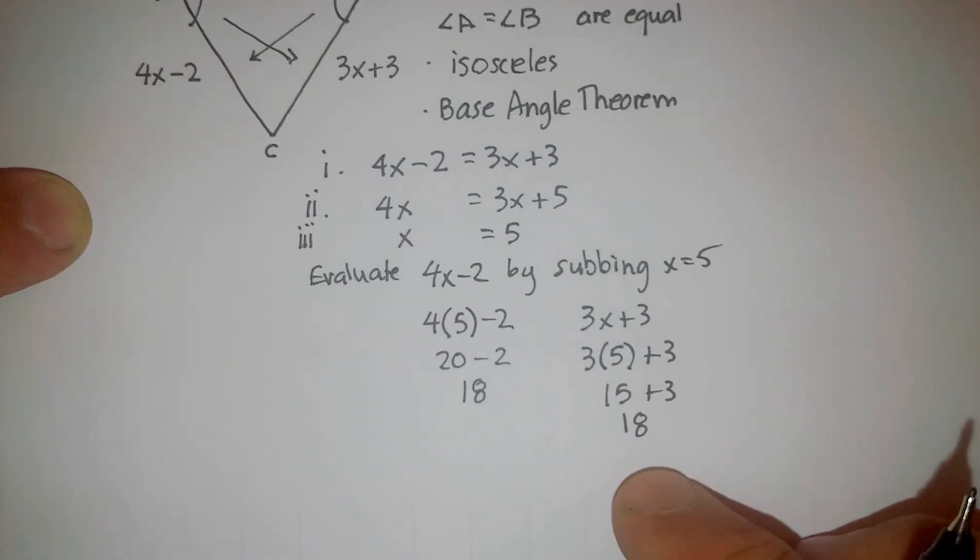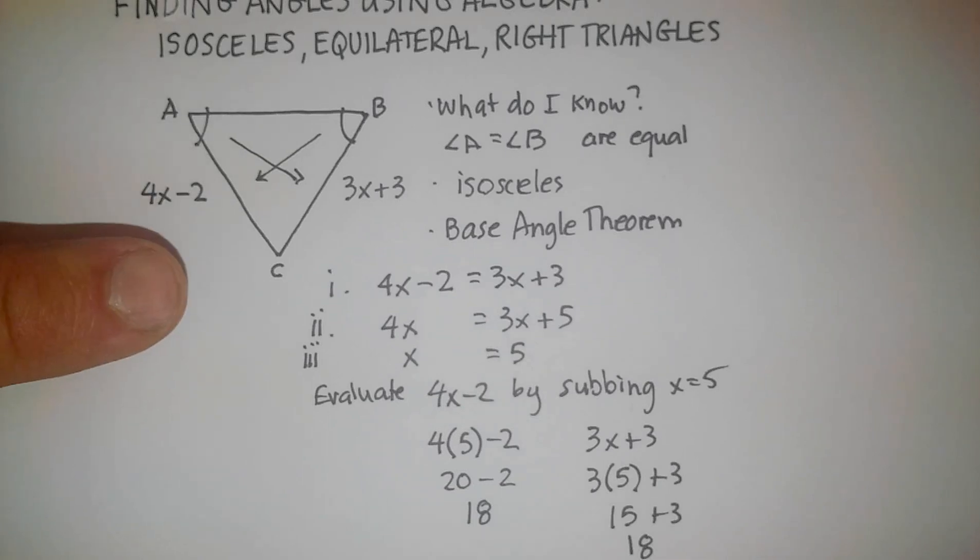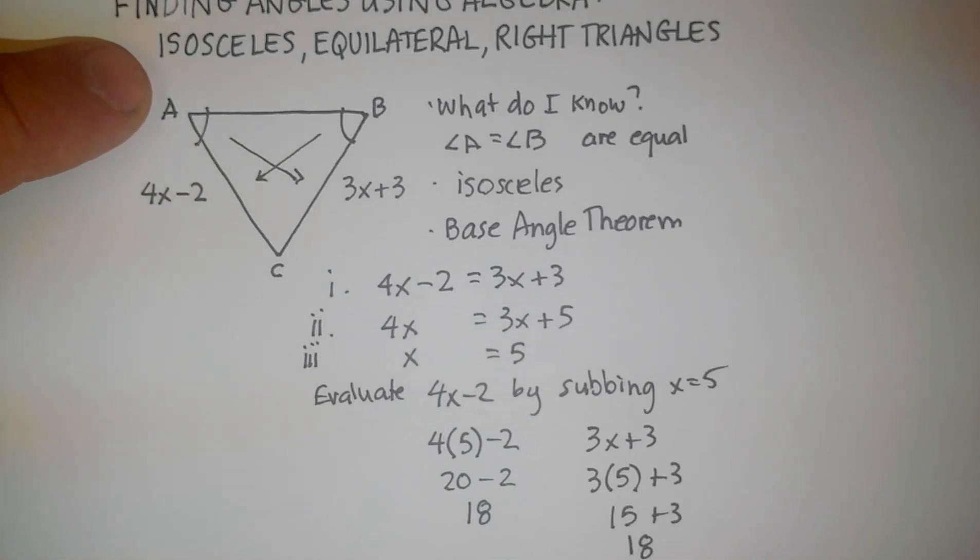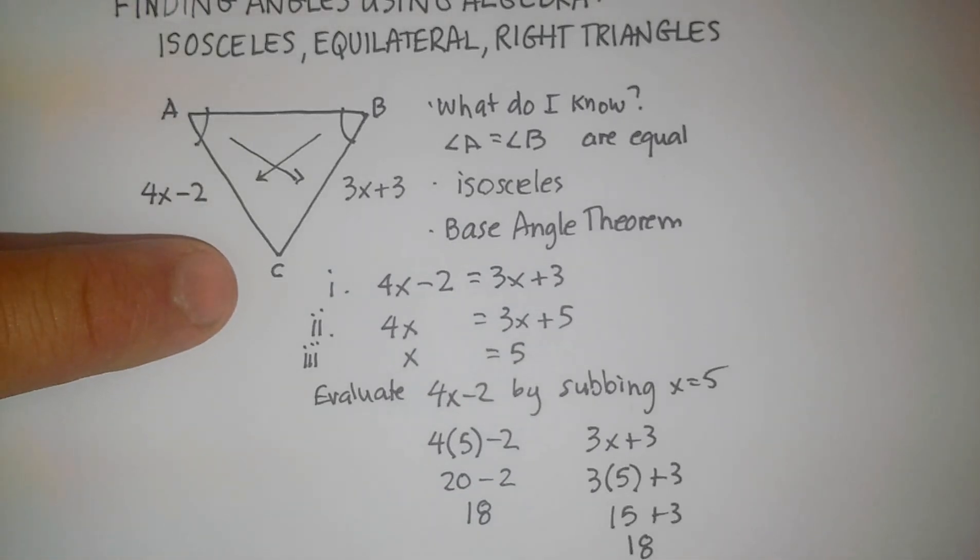So in this case, the x is equal to 5. In this isosceles triangle, line segment AC is equal to 18, line segment BC is equal to 18. I hope that was helpful.